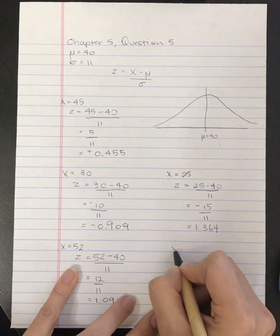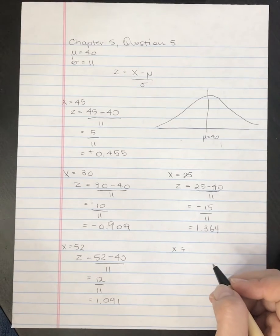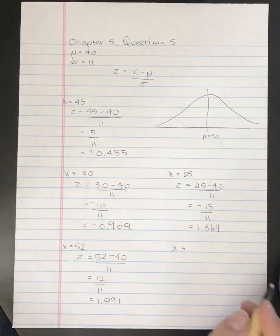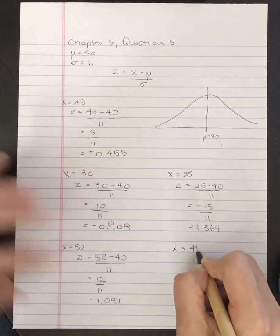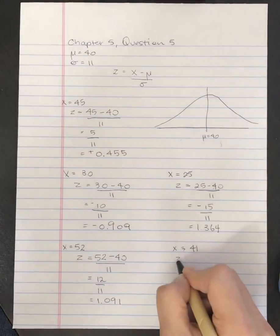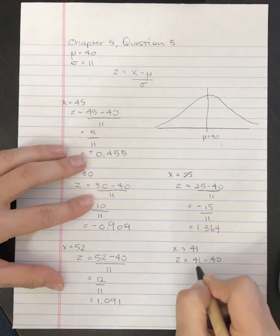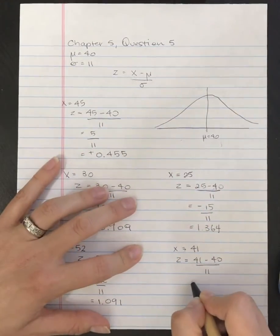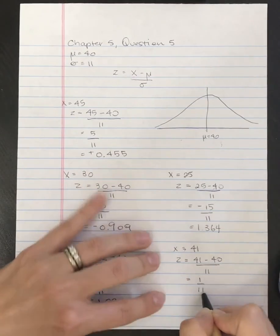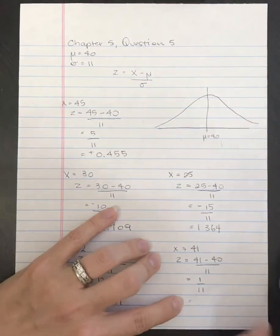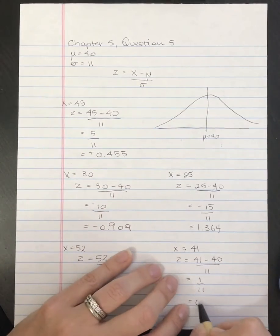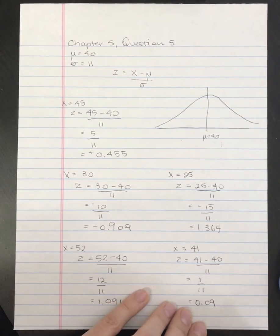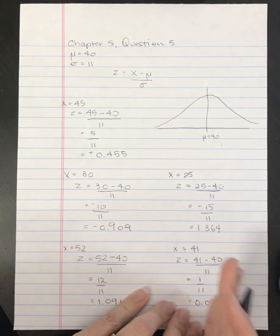Actually, I've got two more. The next is x equals 41. We take z equals 41 minus 40, divided by 11. Since 41 is larger than 40, we're expecting it somewhere over here. That's 1 divided by 11, which equals 0.0909 repeating — so 0.091 if you want to keep three digits.